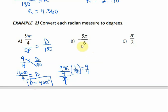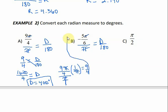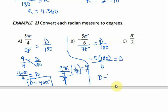I'm going to do the same thing with the next example. The pi's cancel, and I get negative 5 times 180 over 6 equals D. When I divide that out, I get negative 150 degrees.